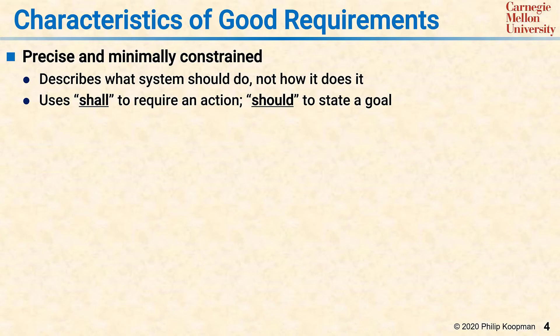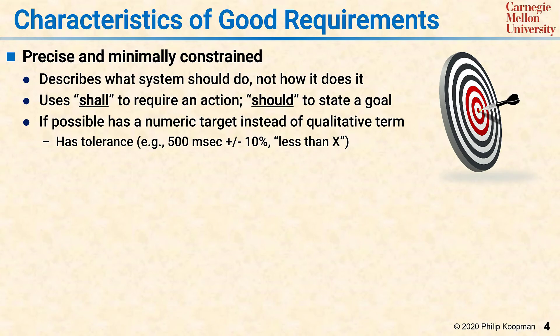Another good precise requirements practice is to have a numeric target instead of a qualitative term. For example, instead of saying the user interface is fast, you might say that there's a response to a user selection within 500 milliseconds, or the period for a refresh is 500 milliseconds plus or minus 10%.